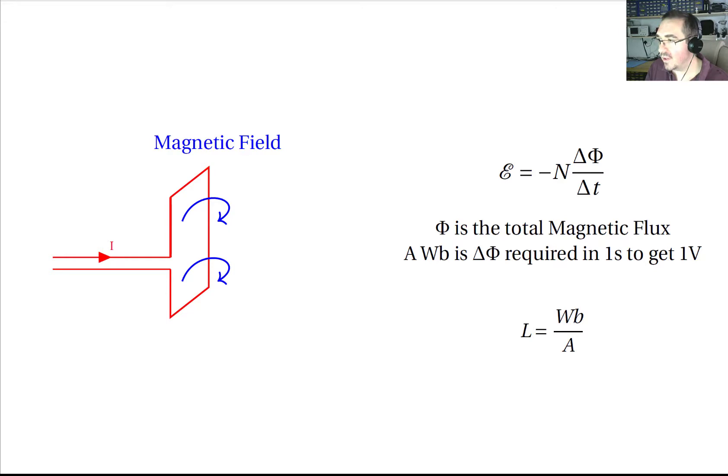And you can design conductors with very high inductance. I mean the easiest way to do it is just to have lots of loops and have something that looks like a solenoid, and in fact that's why the symbol for an inductor is something that looks like lots of loops.